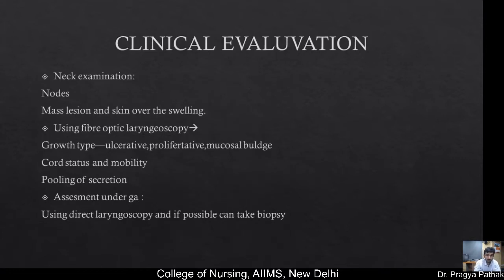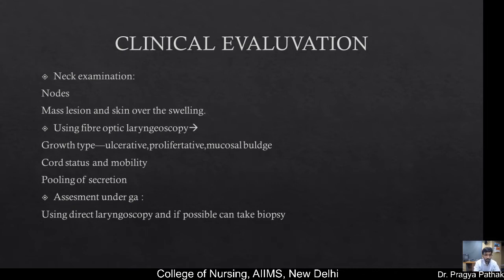In clinical examination, after detailed history taking, we perform neck examination to check for nodes, masses, skin over any swelling, and crepitations (Brook's sign). We then perform indirect laryngoscopy. If the growth is on the supraglottis, we will see obvious lesion there. If indirect laryngoscopy is not possible, fibre-optic laryngoscopy is done to assess the type of growth — ulcerative, proliferative, or mucosal bulge — cord status and mobility, and pooling of secretions (Jackson's sign). Biopsy is taken by direct laryngoscopy.